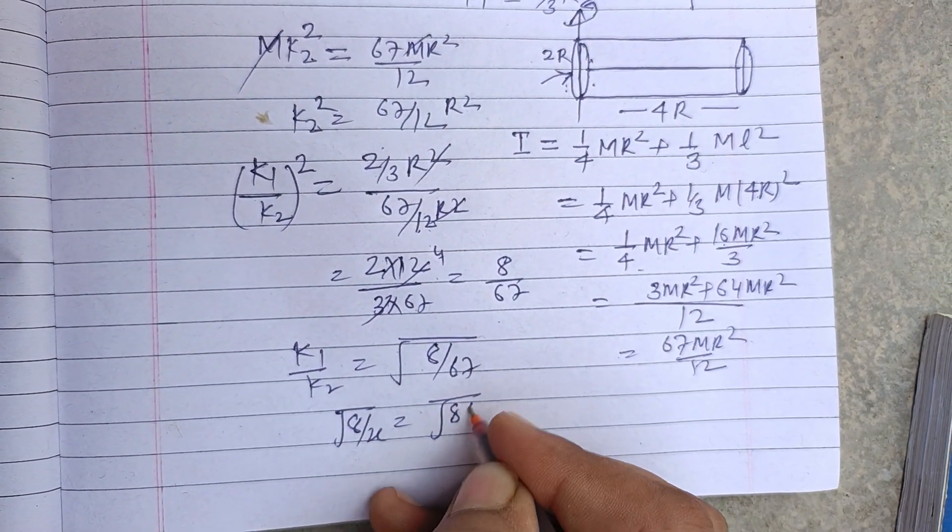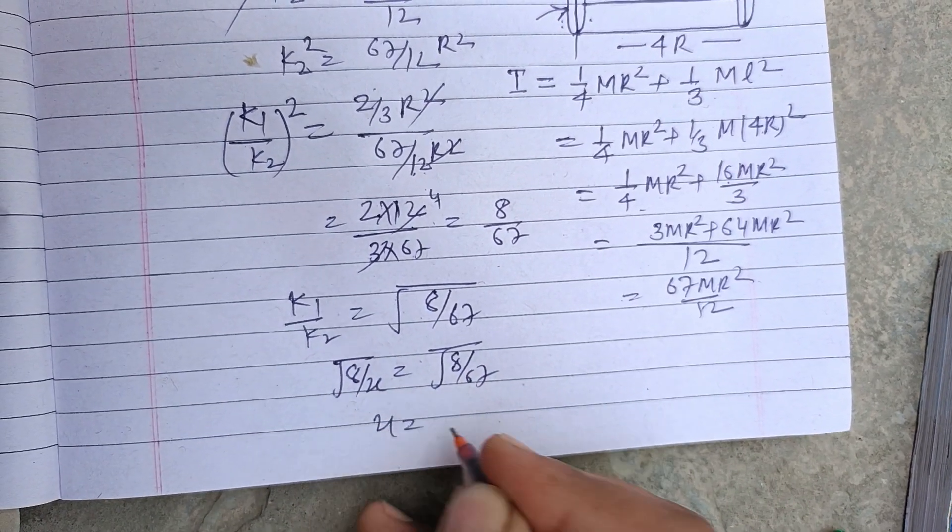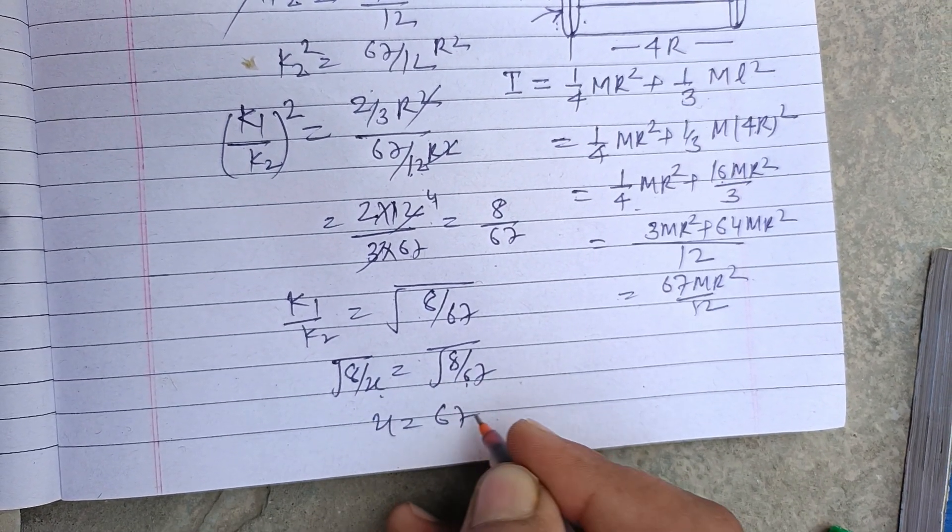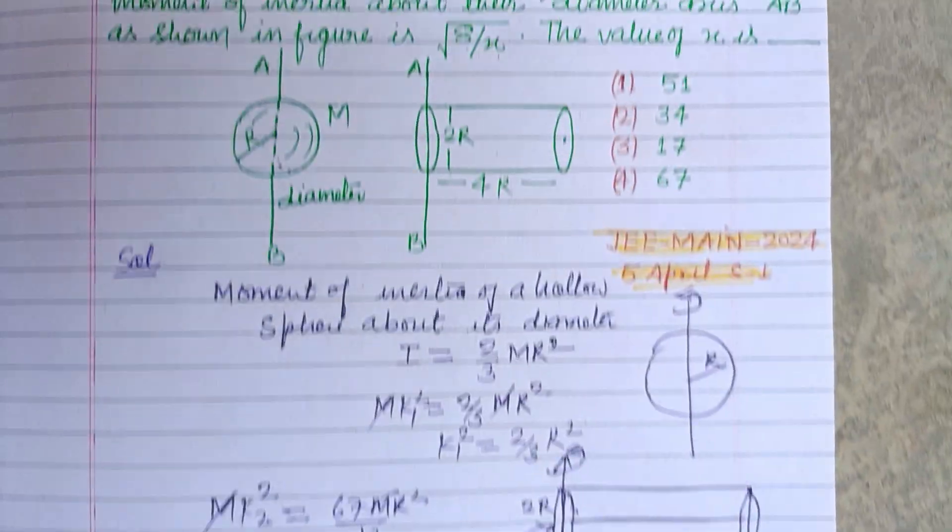So √(8/67) equals √(8/X). Comparing, we get X equals 67. So 67 is the correct answer to this question.